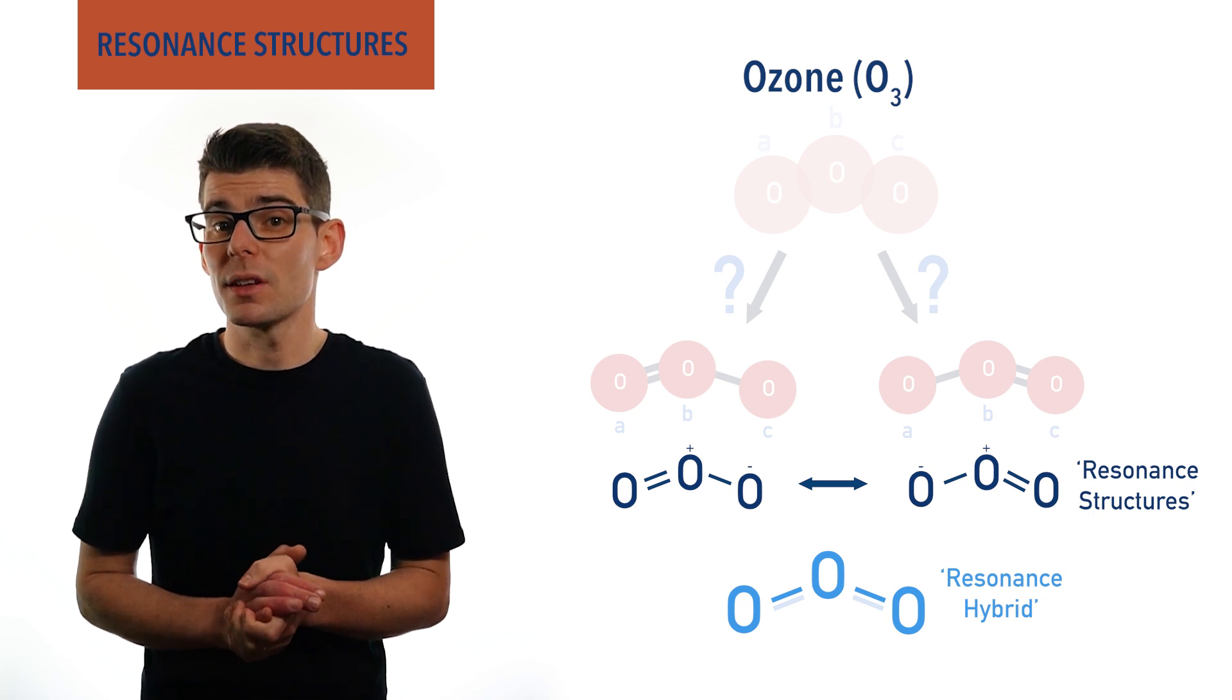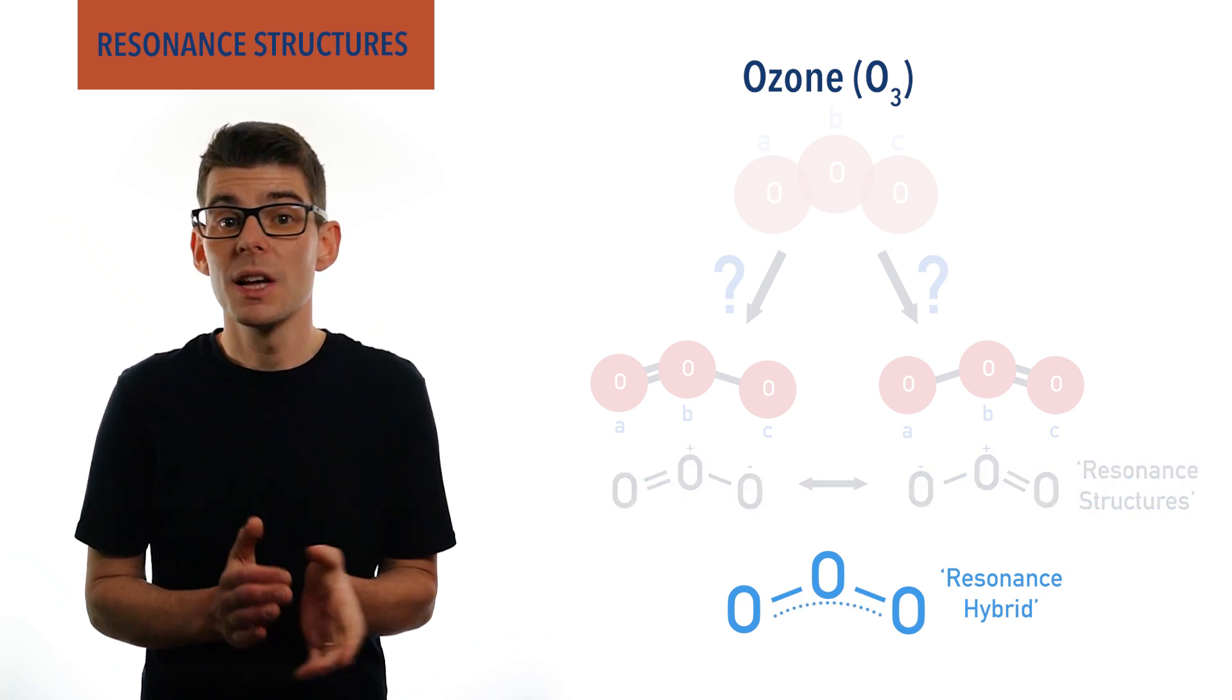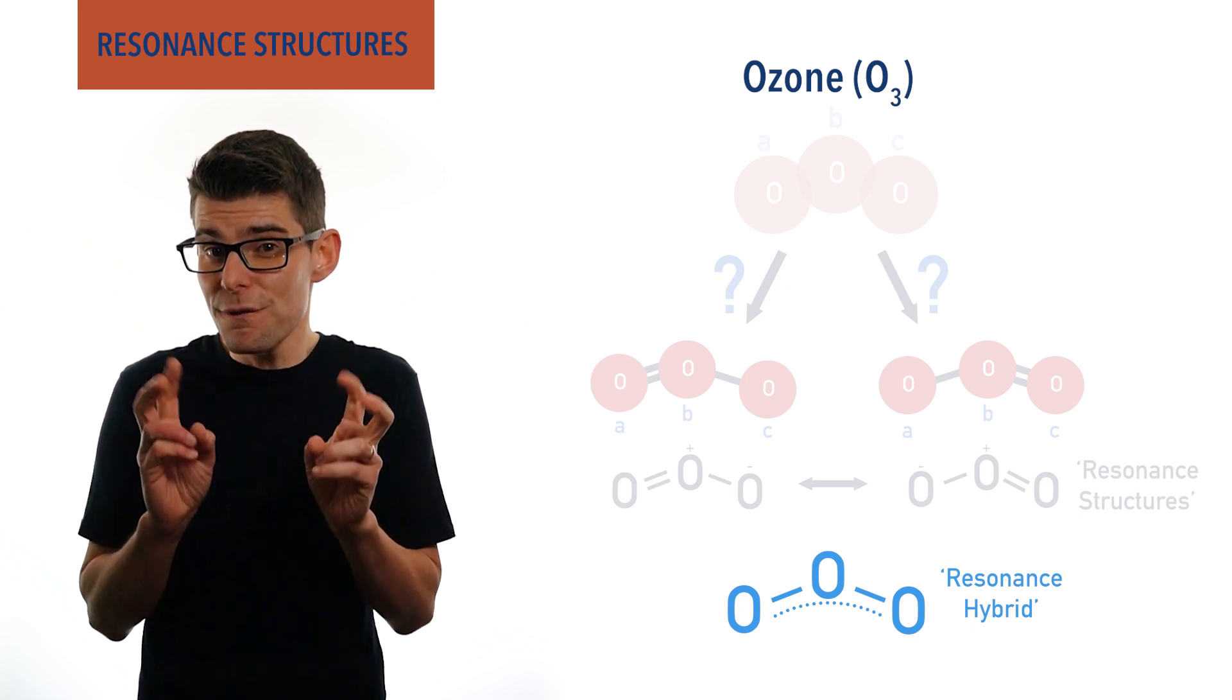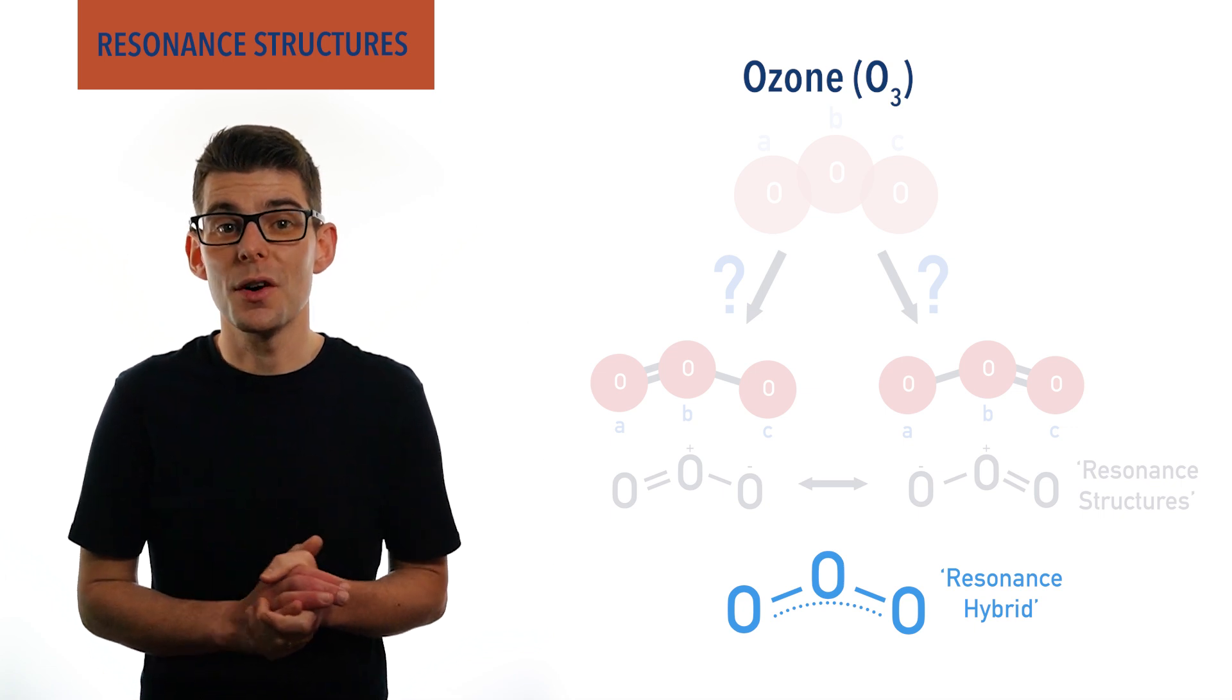To represent the resonance hybrid, we draw a dotted line between all three oxygen atoms that are singly bonded together, showing that electrons aren't fixed in one position and are delocalized between the three oxygen atoms.